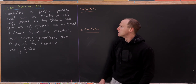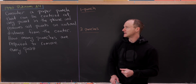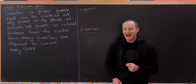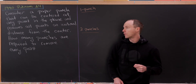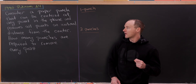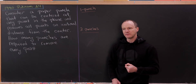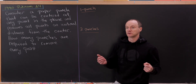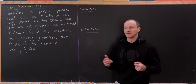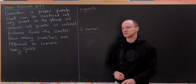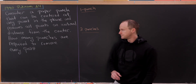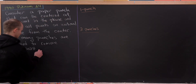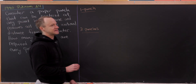Let's see what we have here. We want to consider a paper punch that can be centered at any point in the plane. When you activate this paper punch, it removes all points that are an irrational distance from the center — so everything on the circle of radius √2 or radius π away from the center, for all irrational numbers. The question is: how many punches are required to remove every point in the plane?